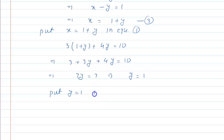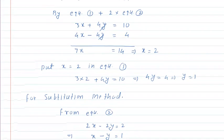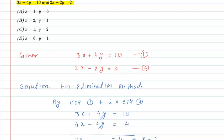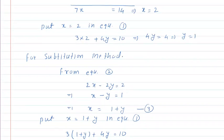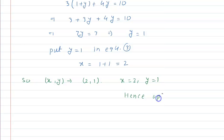Putting y is equal to 1 in equation 3: x is equal to 1 plus 1, which is 2. Both methods give the same answer for x and y, as they should. So the final answer in order pair form is (2, 1), where x is equal to 2 and y is equal to 1. Checking the options, option B matches our answer. Hence, option B is correct. I hope you understood this solution. Thank you.